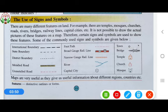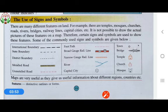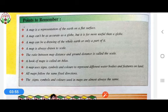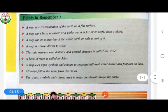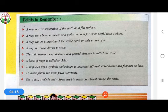Now we know what is a map. A map is a representation of the earth on a flat surface. A map cannot be as accurate as a globe, but it is far more useful than a globe. A map can be a drawing of the whole earth or only a part of it. We have learned about an atlas.